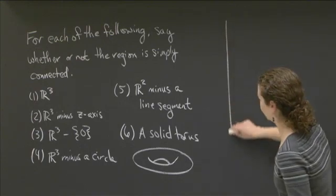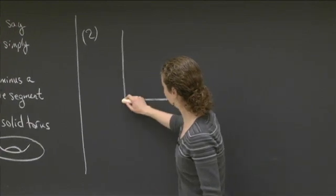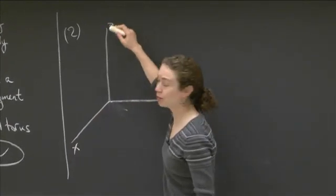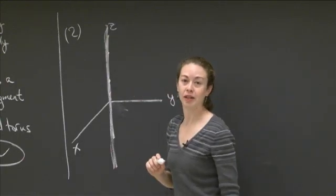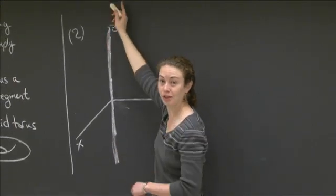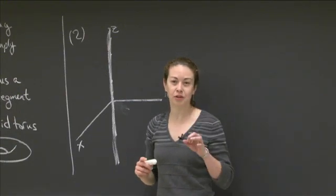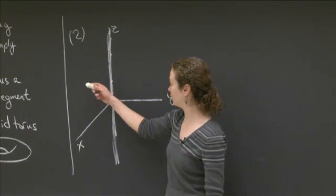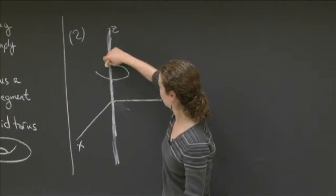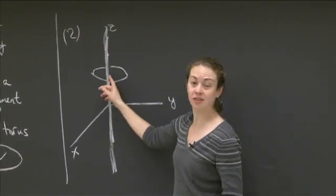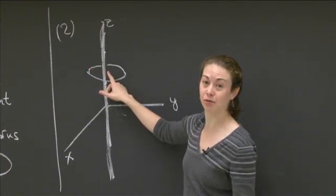Let's start on the second one — I'll draw a picture. So the second one is R3 with the entire z-axis removed. I'm removing it all the way to minus infinity and plus infinity in the z-direction. The question is: can I find any closed curve that, when I try to compress it down to a point, I can't do it while remaining inside this region — all of R3 minus the z-axis?